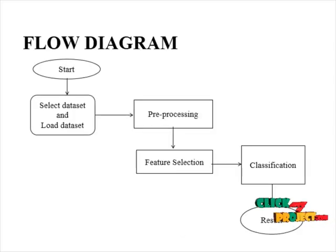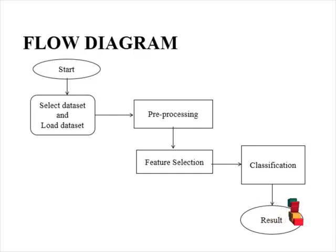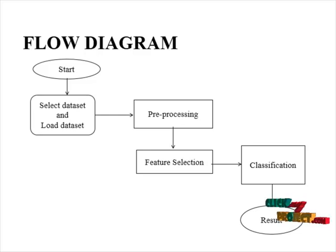The flow diagram of the project is: first we need to start the program and read the dataset. After reading the dataset we need to check the information about the dataset and describe the dataset. Then it will move into pre-processing.